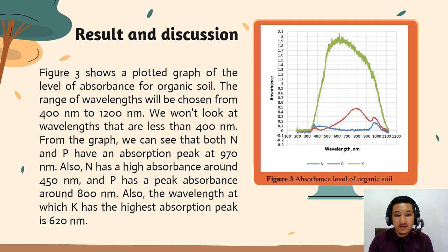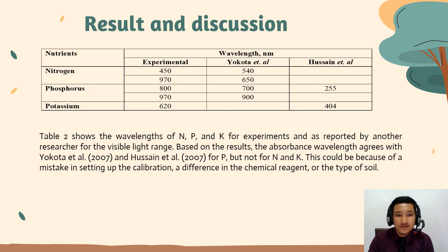K has its higher absorption peak at 620 nm. This is able to show the wavelengths of NPK for the experiment, supported by other research for the visible light range. Based on the results, the wavelengths agree with Yokota 2007 and Usain 2007 for P, but not for N and K. This could be because of a mistake in setting up the calibration, a difference in chemical agent, or the type of soil sample.